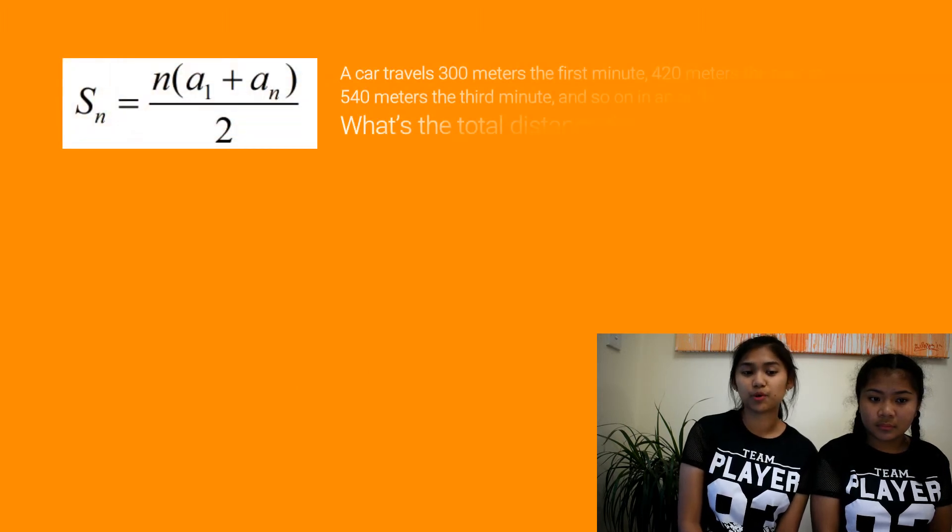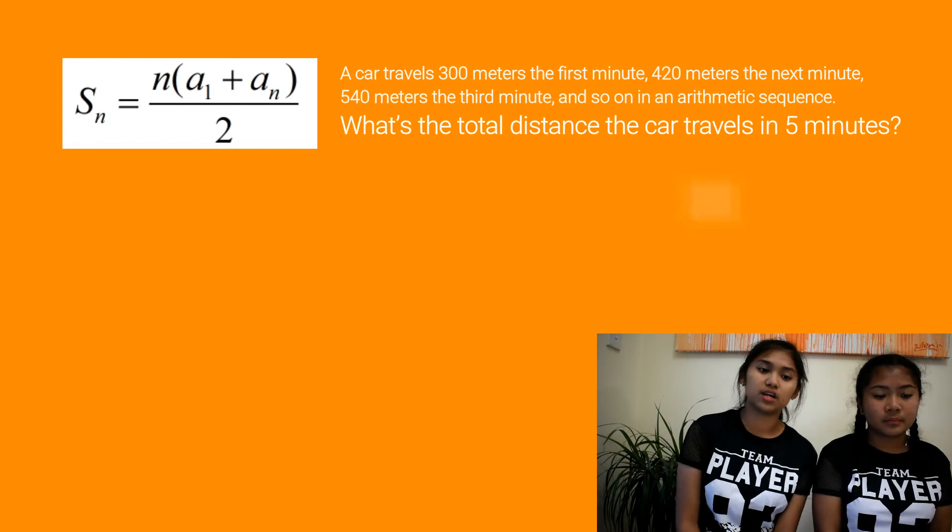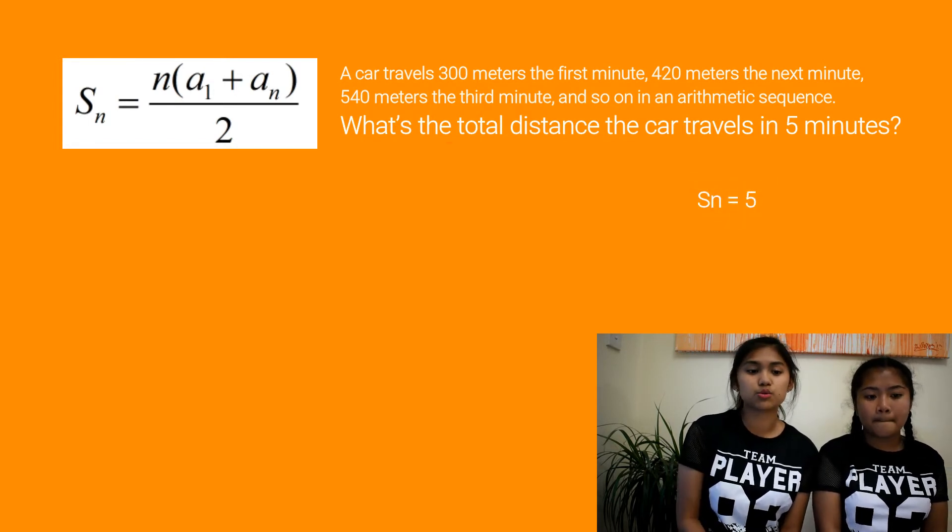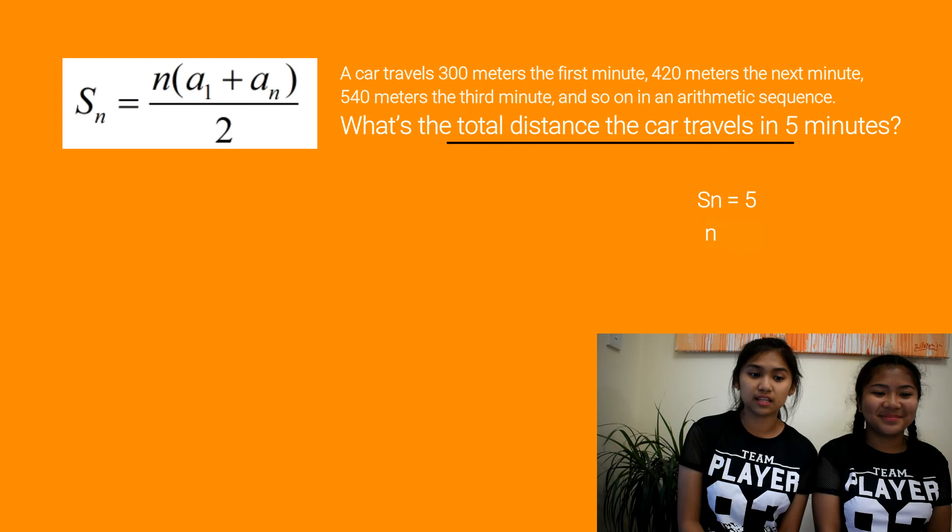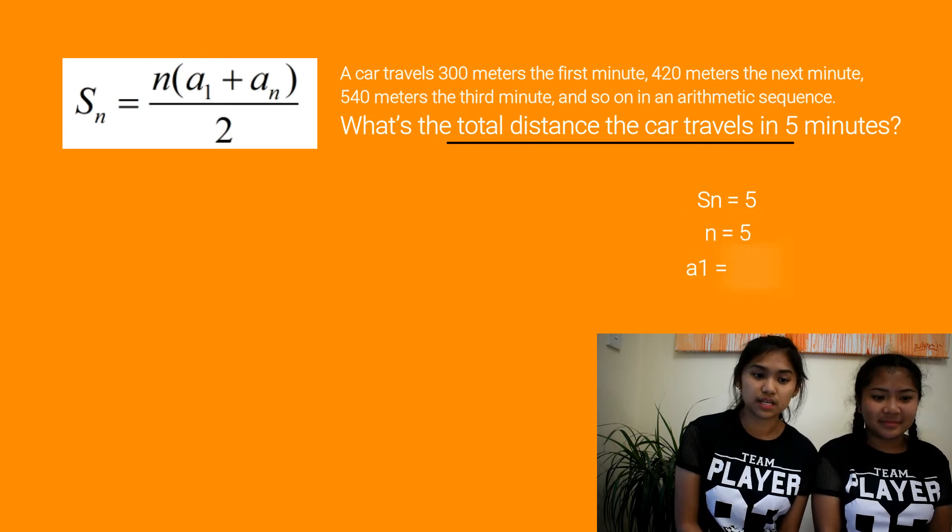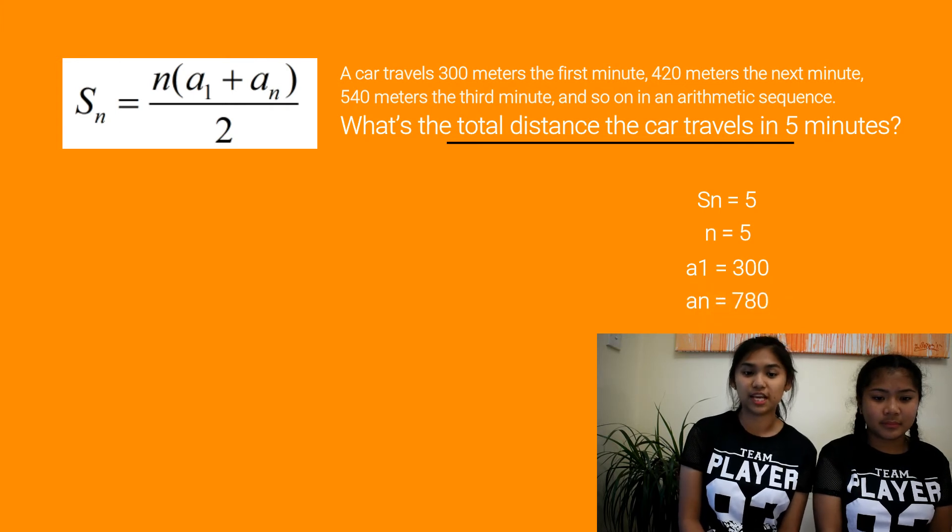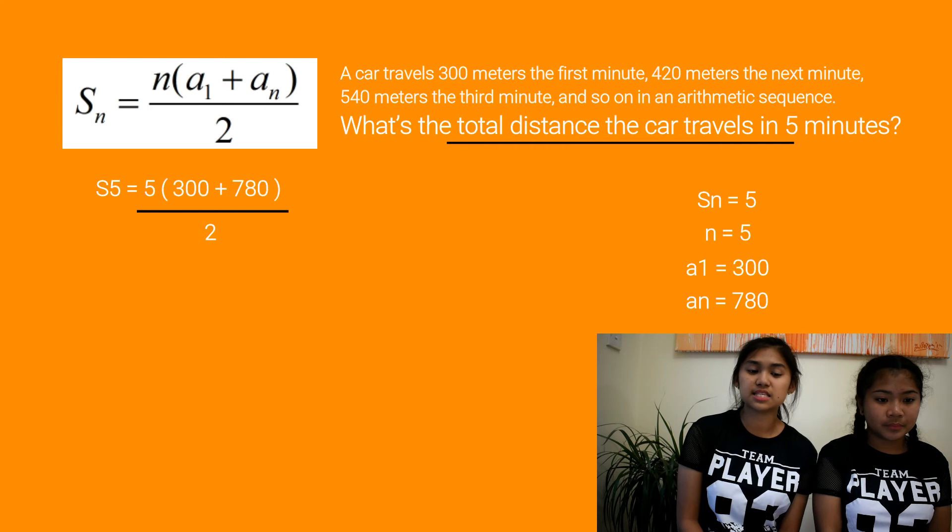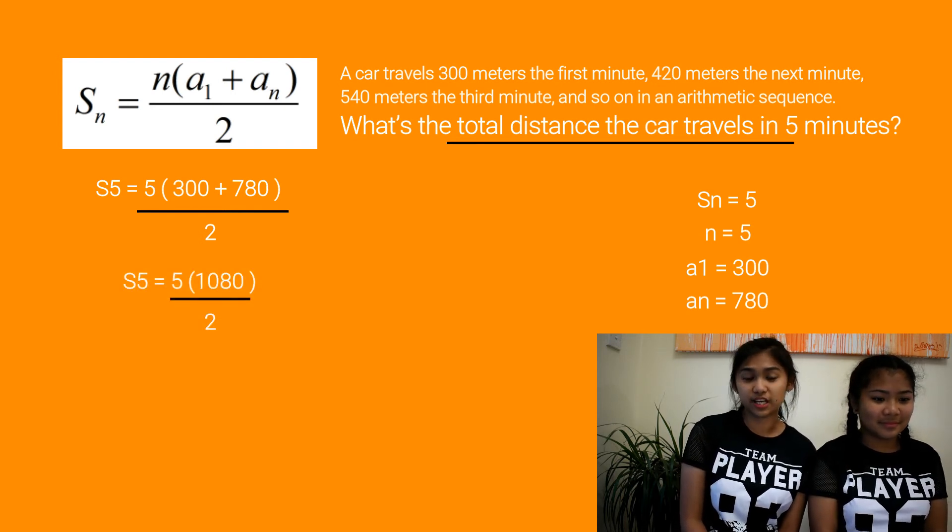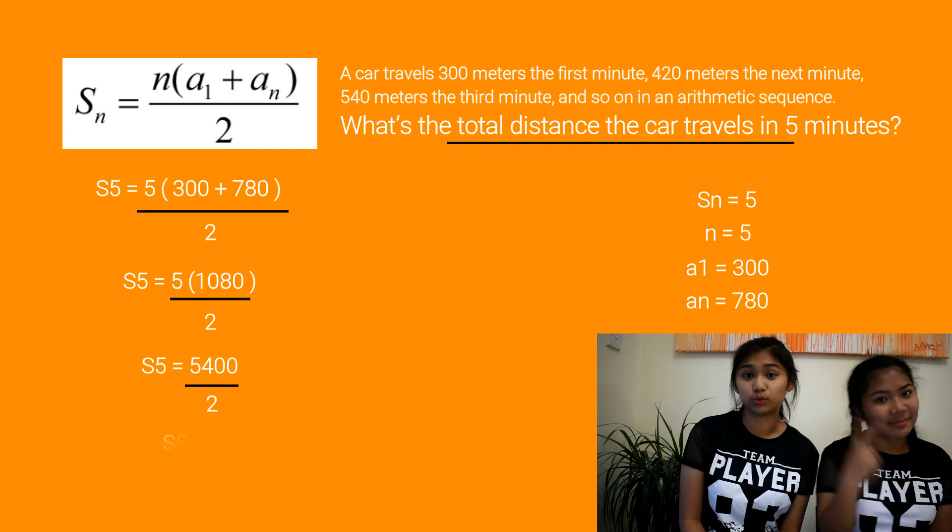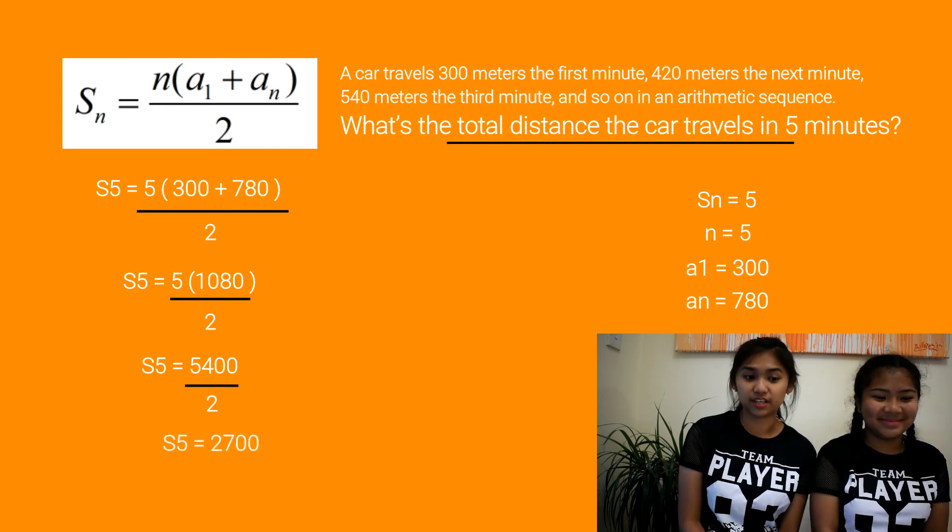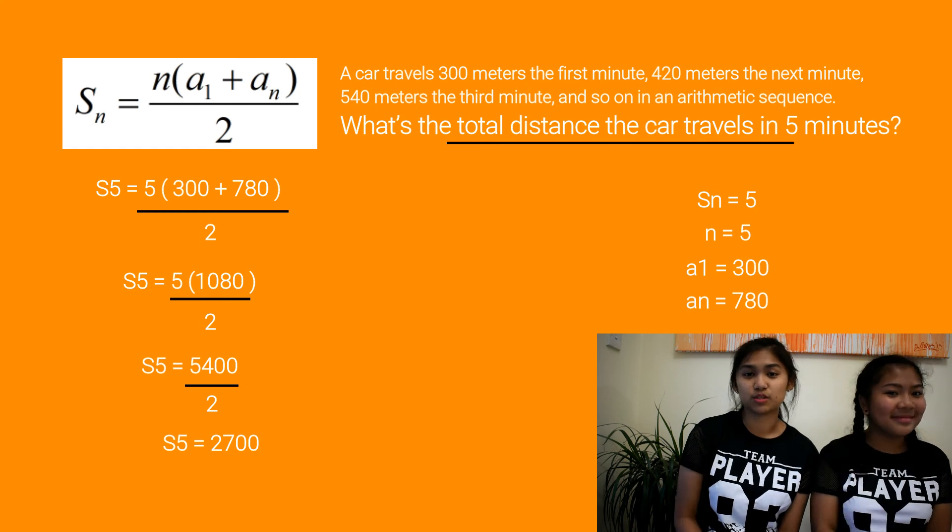We're going to use the second formula to find the total distance. The given are S sub n is equals to 5 because we're going to find the total distance of the car that travels in 5 minutes. Then, n is 5, our first term is 300, and our n-th term is 780. For instance, we have S sub 5 is equals to 5 quantity of 300 plus 780 divided by 2. First, we're going to add 300 and 780. Then, multiply it by 5, then divide it by 2, is equals to 2,700. And now, we have our S sub 5, which is 2,700.